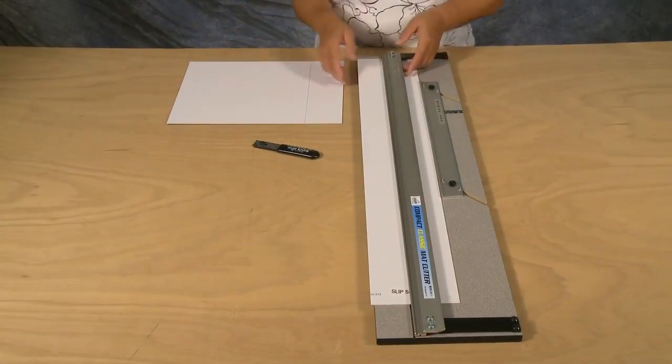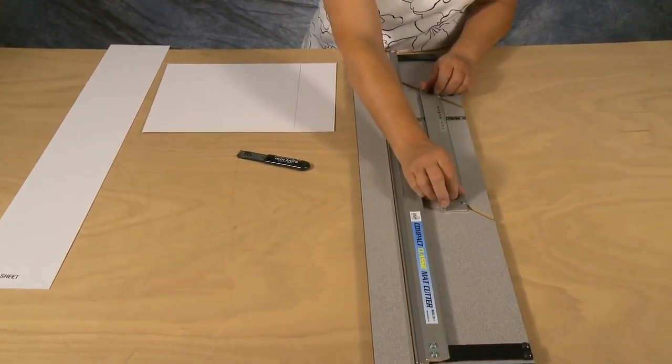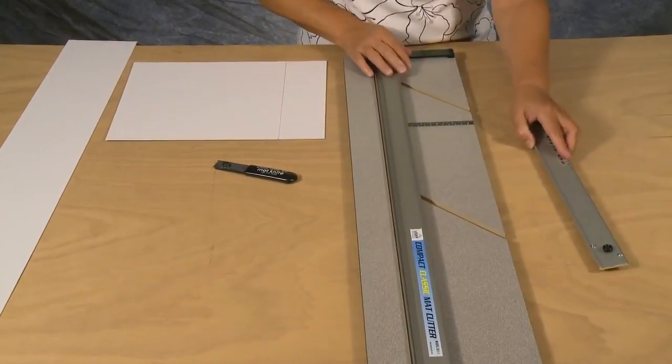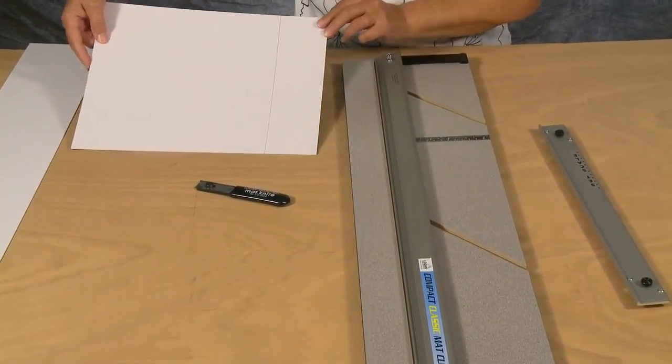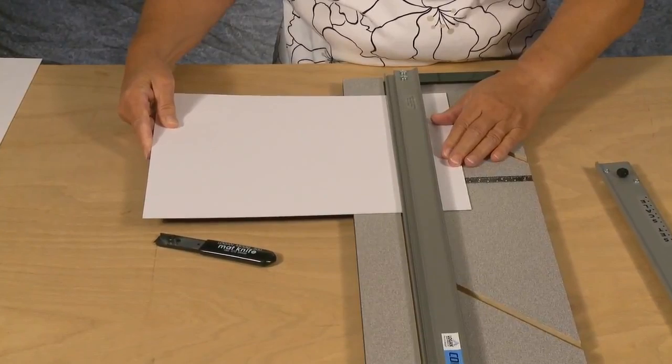To downsize a piece of mat board in the compact, first remove the slip sheet and the parallel mat guide. Place a pre-marked blank of mat board under the guide rail, aligning the pencil line along the side of the aluminum guide rail.